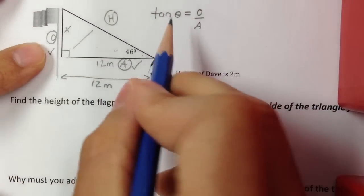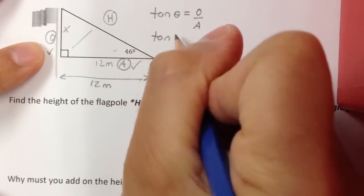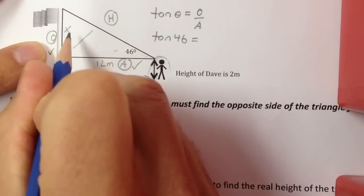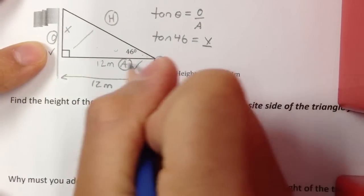Okay, next thing you've got to do is plug in everything you know. The angle is 46. The o side is x. And the a side is 12.